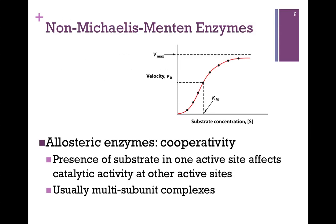Another example would be allosteric enzymes that exhibit cooperativity. Remember the example of hemoglobin, where oxygen bound in one subunit converted the molecule from the T to the R form, making it easier for oxygen molecules to bind in the other subunit — the binding was cooperative. We see the same thing in enzymes: the presence of substrate in one active site affects the catalytic activity at other active sites. This is often true for multi-subunit complexes. From the graph here, when we plot initial velocity versus substrate concentration, we don't get the characteristic hyperbolic plot of Michaelis-Menten kinetics — it's now sigmoidal, so we can't use that equation any longer.